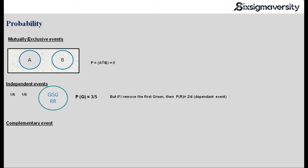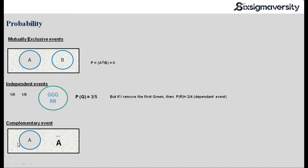Now what is a complementary event? This is something we have already seen earlier. If I show this on a Venn diagram, the experiment A — anything outside of A would be not A, or it is also represented as A-bar. So if I want to calculate the probability of A-bar, that would be 1 minus probability of A. Therefore, the probability of A and probability of A-bar, if you add up, you get the value as 1.